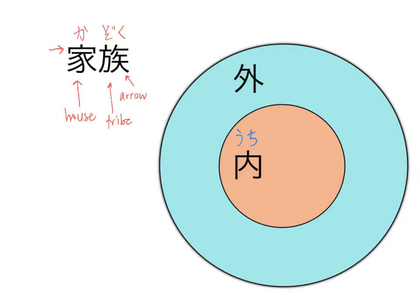Those are the family members that you have in your family. They are referred to as your uchi, as opposed to soto. Soto are those outside of your family.